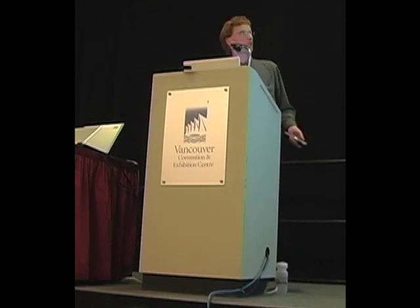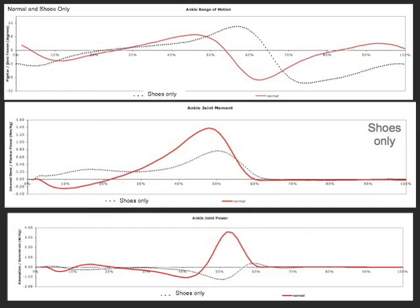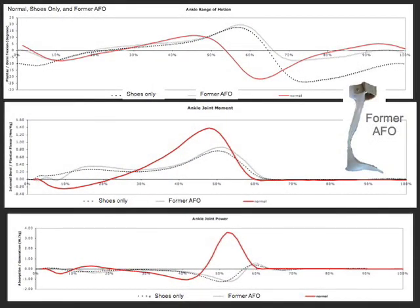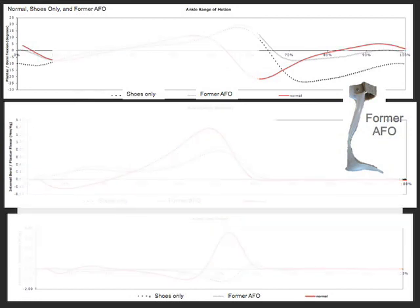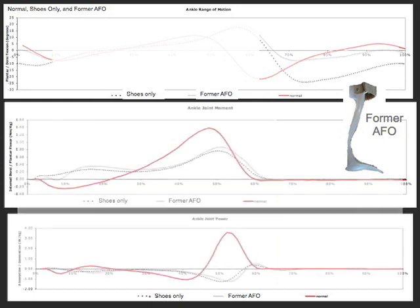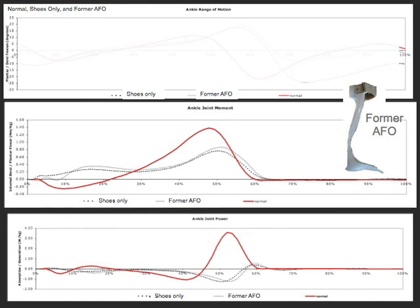This is where it starts getting a bit more interesting. When we lay on top of that the solid gray line representing the patient's former AFO, you'll notice that during the swing phase we have much less drop foot, very close to normal, and improved initial contact. But otherwise, there is very little difference between the moment and power profiles, because the former AFOs were very flexible in dorsiflexion and could not resist bending sufficiently to alter the moment or power profiles. Basically, the former AFOs were only able to alter the swing phase and initial contact kinematically.